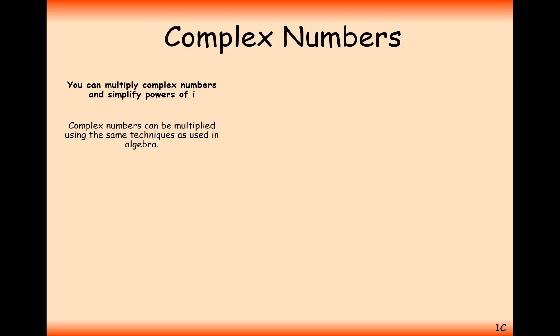When we looked at adding complex numbers together, we added the real part separately and the imaginary part separately. Now in multiplying complex numbers, it's going to be a different technique altogether. You don't just multiply the real parts and you don't just multiply the imaginary parts and get your answer.